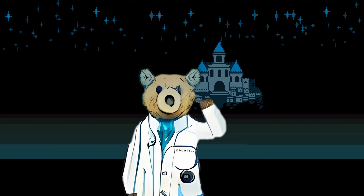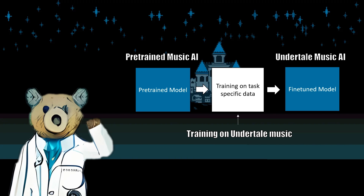Now, 112 MIDIs aren't quite enough to train a model from scratch, but they are enough to fine-tune an existing model for domain-specific generation. Essentially, if we had a pre-trained AI that already knows how to generate music, we could teach it to specifically write Undertale music by showing it our small dataset.